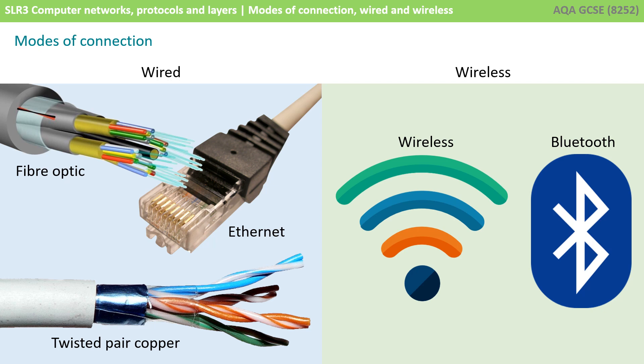With wired connections, devices are physically connected together via wires. There are many different types of wires that can be used to connect computing devices, and depending on the nature of the wire depends how fast that connection can be. Traditionally, twisted pair copper cables have been used, and if you look into the back of your router at home or a computer at school, you'll probably find a twisted pair copper cable.